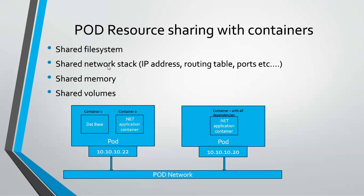The pod's file systems, network stack, IP addresses, routing tables, ports, shared memory, and volumes are all shared with the Docker container. Regarding IP addresses: when you wrap a container inside a pod, the pod has its own IP address, and the containers running inside that pod will share that IP address. All pod IP addresses are shared within the pod network.